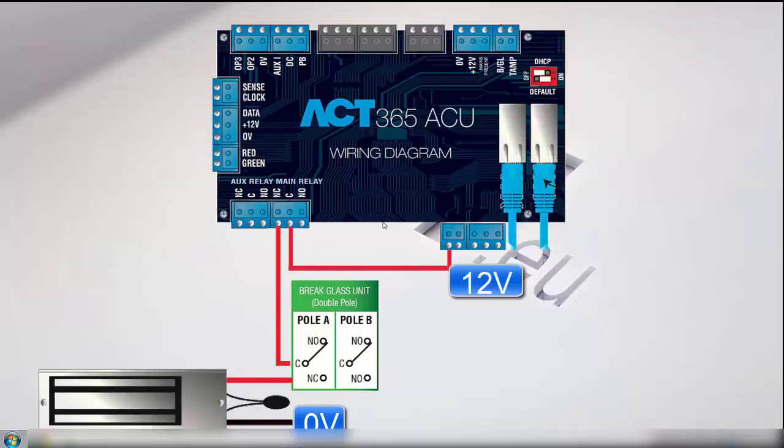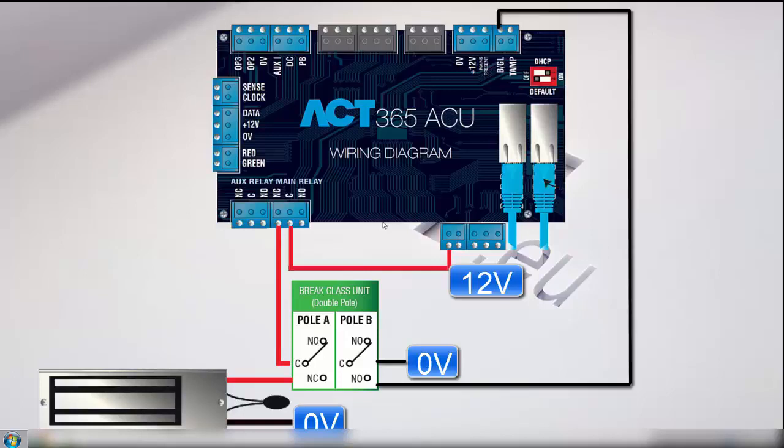To wire we need to bring zero volts into the common terminal of the break glass and then coming out of the normally closed we need to bring this around and wire it into break glass detection input. And that's all that is required to wire the break glass detection.